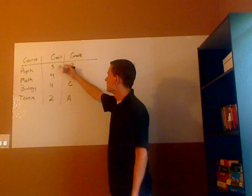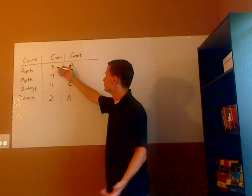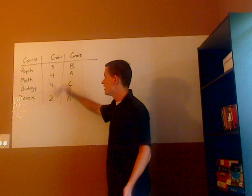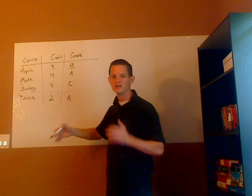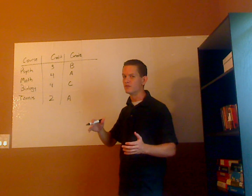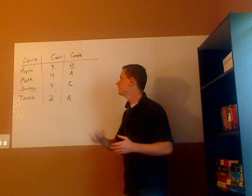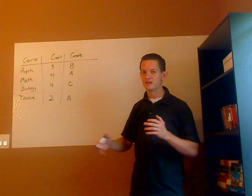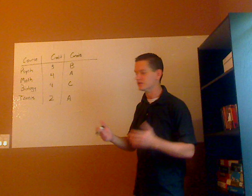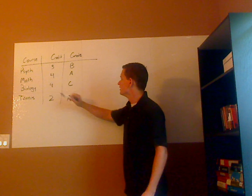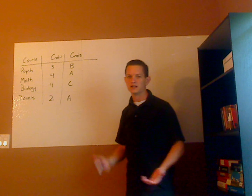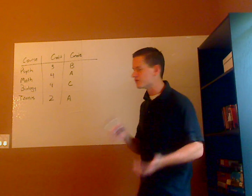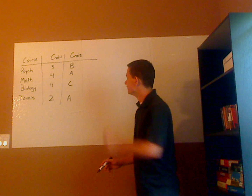So psychology doesn't have a lab, so it's just three credit hours. You have math and biology — typically there are four credit hours, they might be three. Sometimes biology is four, just because it also includes a lab. And then tennis, because it's an elective, sometimes electives are two or three, maybe even one.